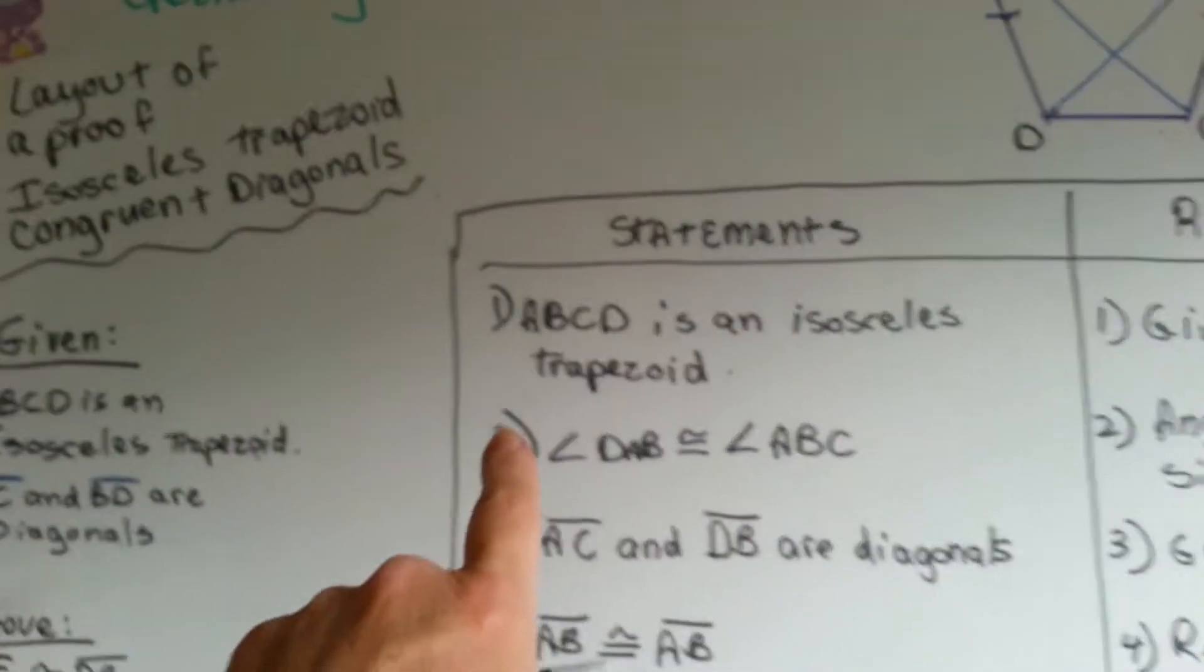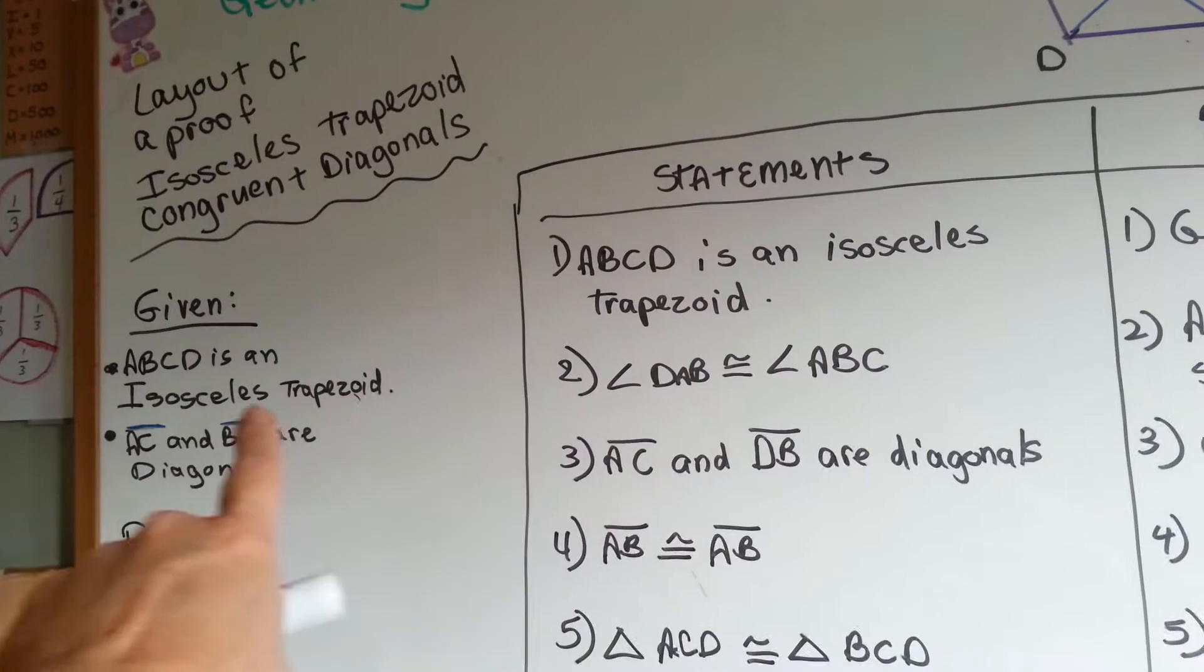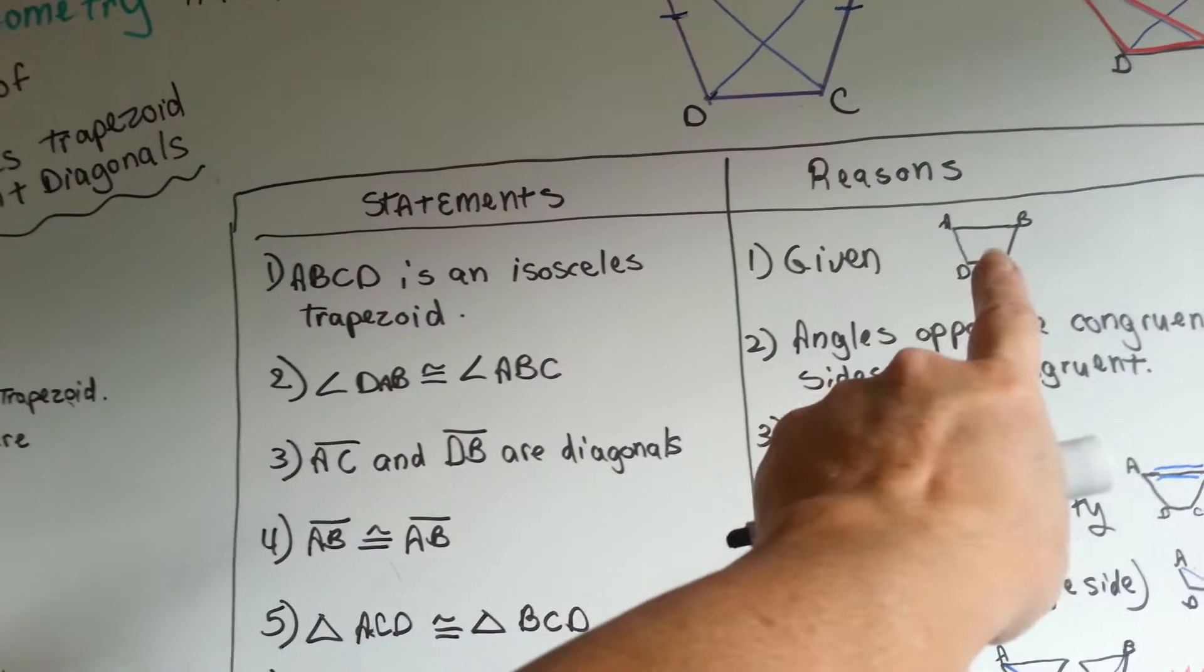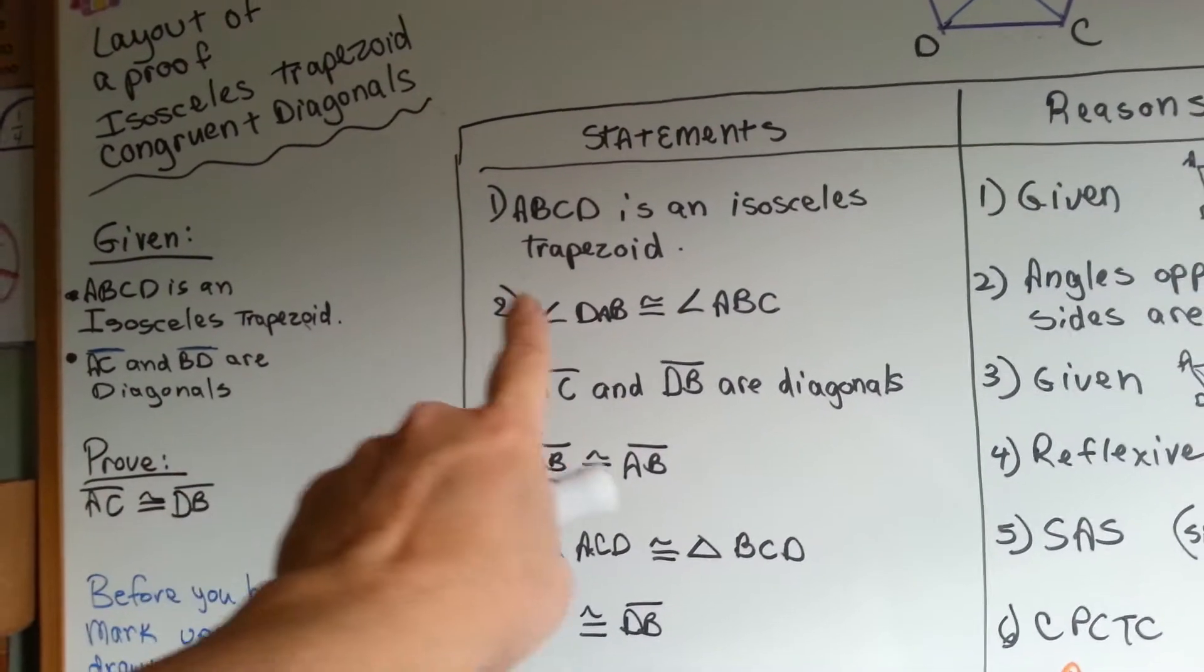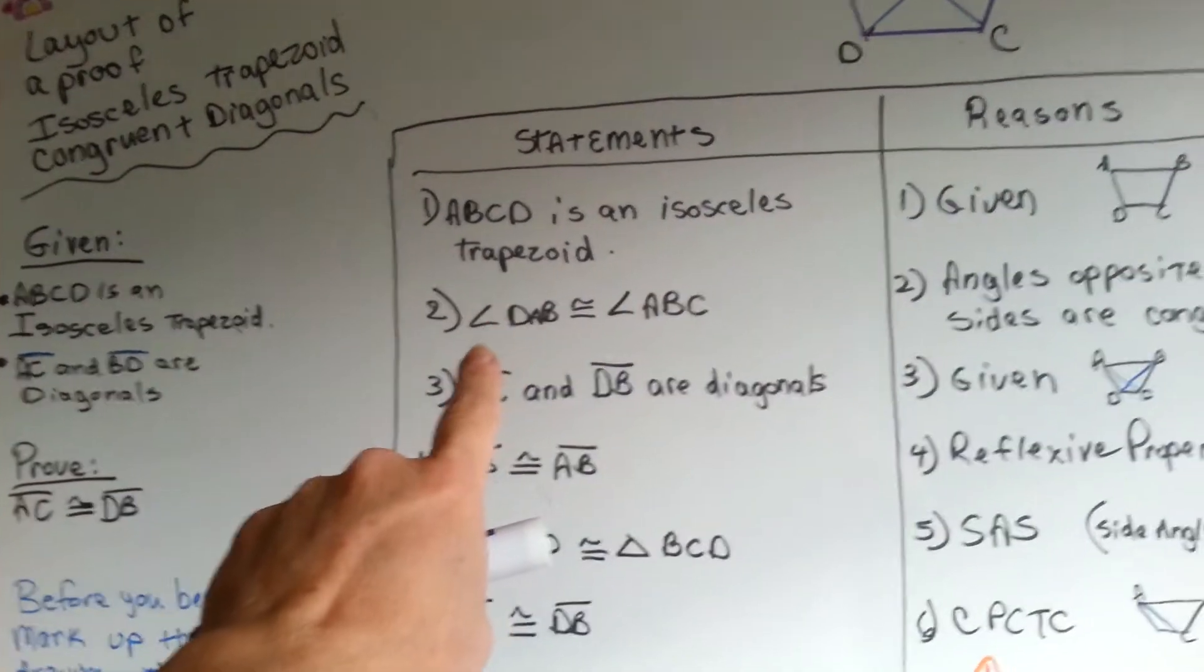We know that that line is congruent to that line and that these diagonals are there. So here we go. ABCD is an isosceles trapezoid. That's given. See it? That's an isosceles trapezoid. AC and BD are diagonals.